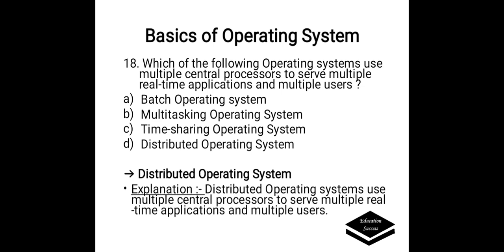Which of the following operating system uses multiple central processors to serve multiple real-time applications and multiple users? Options are A. Batch operating system, B. Multitasking operating system, C. Time-sharing operating system, D. Distributed operating system. Correct answer is D, Distributed operating system. Distributed operating system uses multiple central processors to serve multiple real-time applications and multiple users.